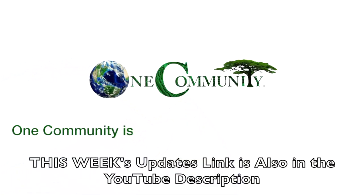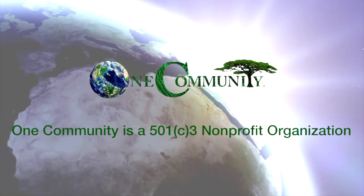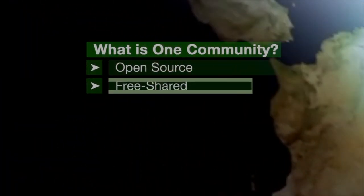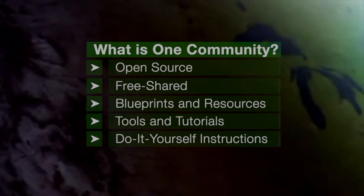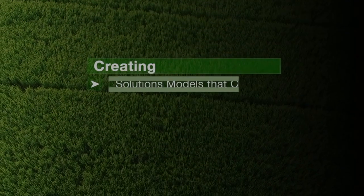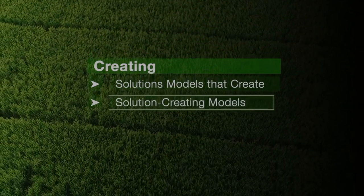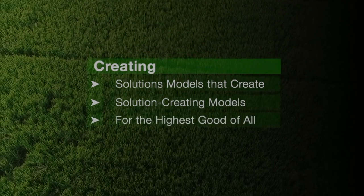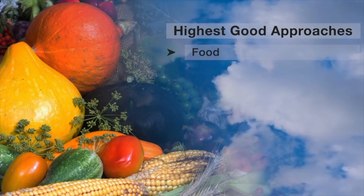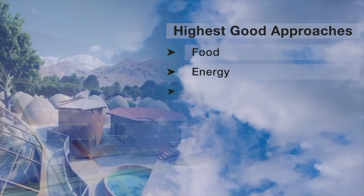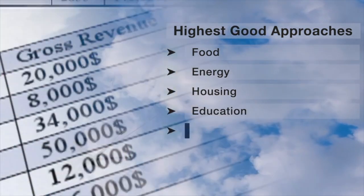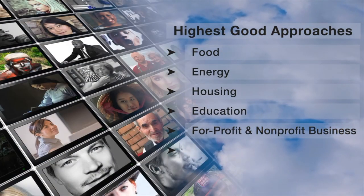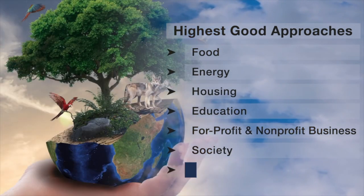One Community is a 501c3 non-profit organization. We are creating open source and free shared blueprints and resources, tools and tutorials, and do-it-yourself instructions for highest good living — creating solution models that create additional solution-creating models in the service of all life on this planet. This includes highest good approaches to food, energy, housing, education, for-profit and non-profit business creation, society, and true earth stewardship.